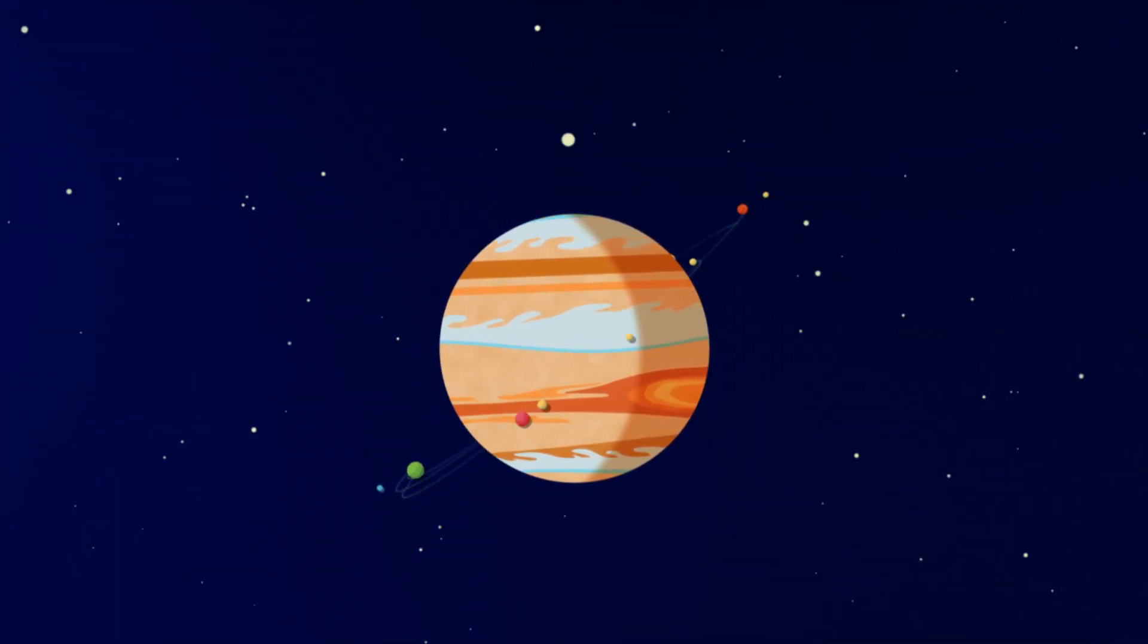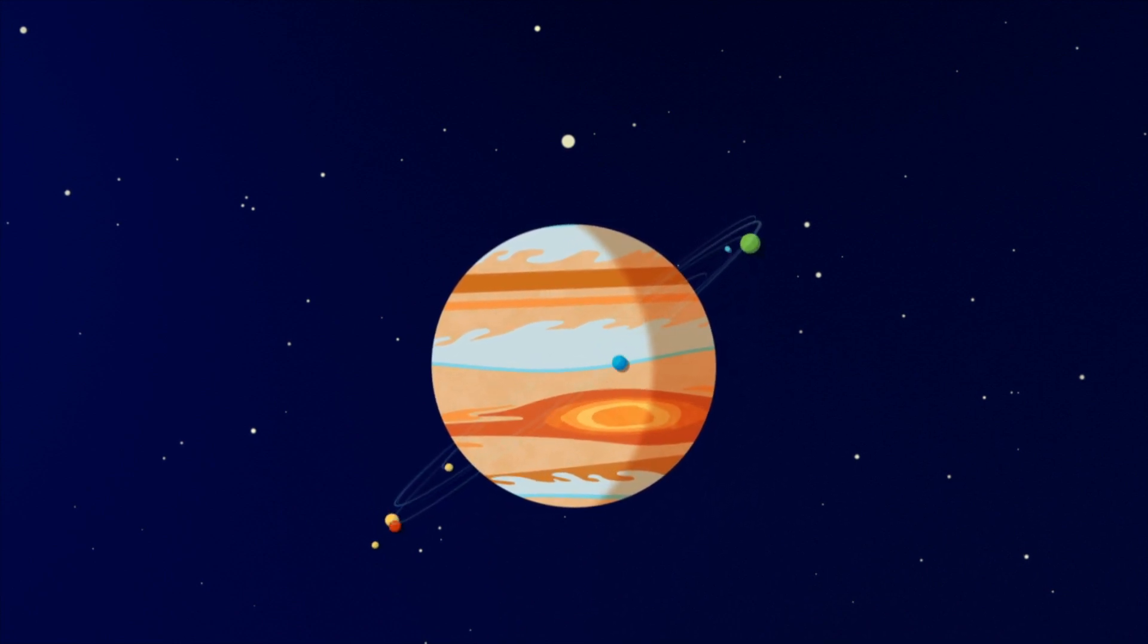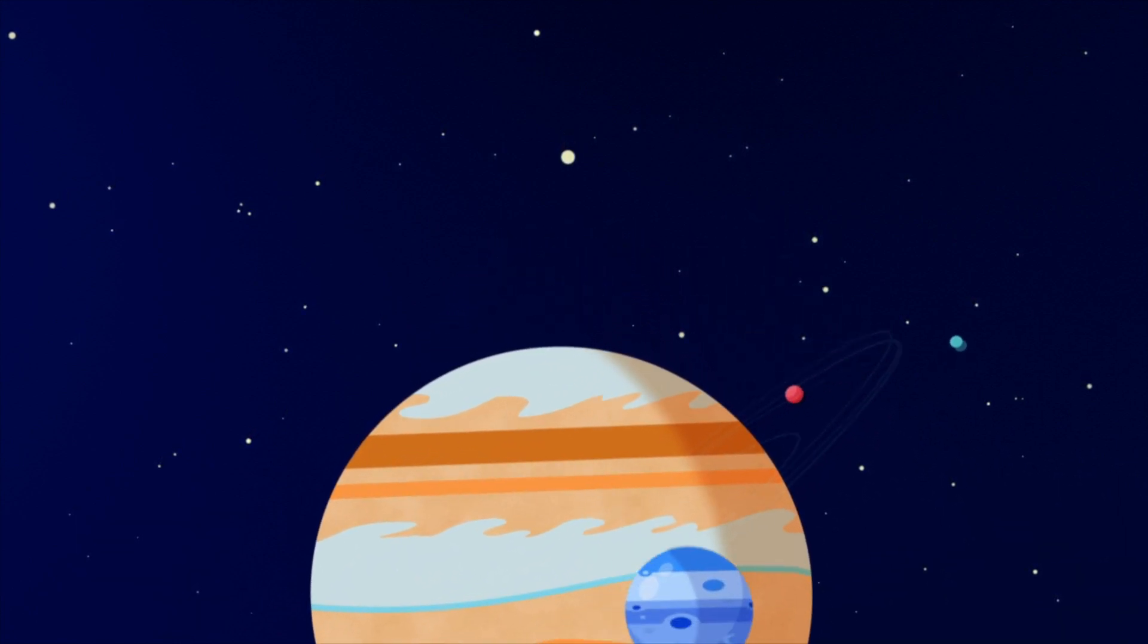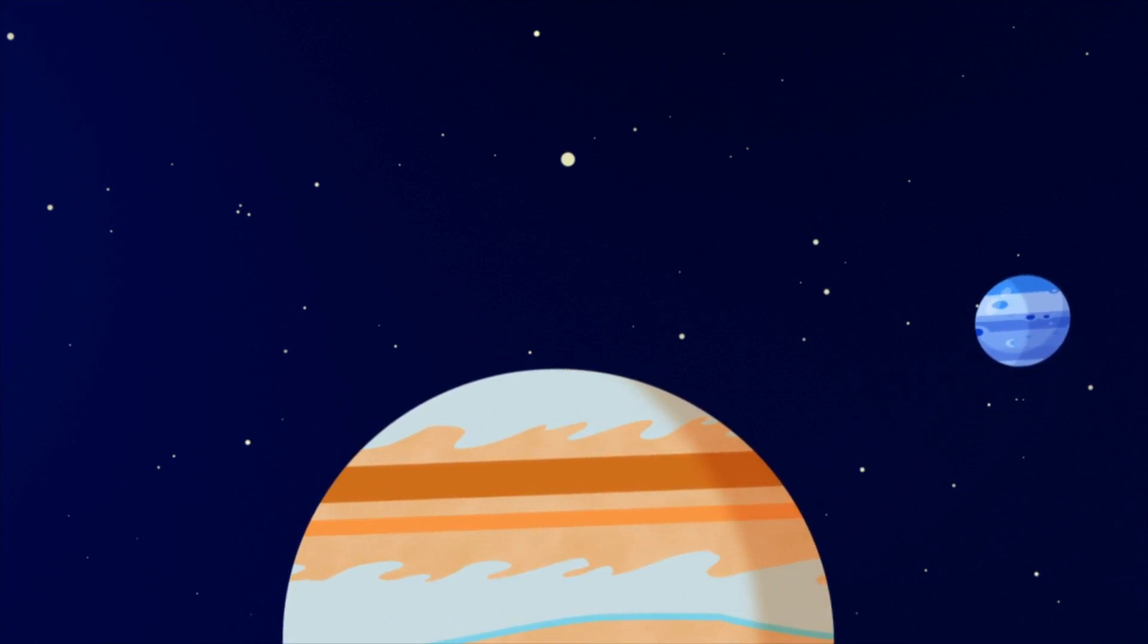It has 67 satellites. The largest of them is even bigger than Mercury. You can't land on Jupiter because it's almost entirely made of gas.